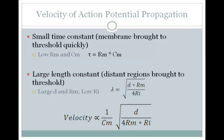Putting these together, we find that the velocity is proportional to 1 over the membrane capacitance times the square root of the axon diameter divided by 4 times the membrane resistance times the internal resistance. You'll notice that membrane resistance is in both your time constant and your length constant. For the time constant, you want membrane resistance to be small.